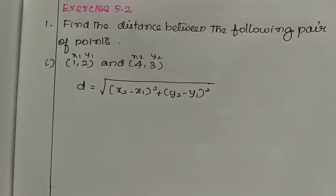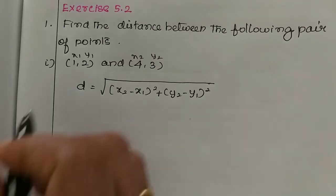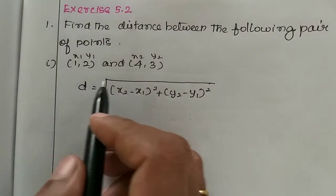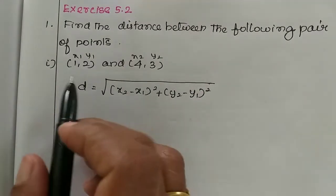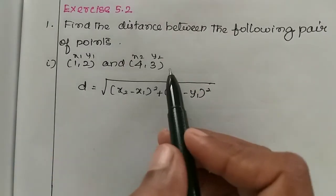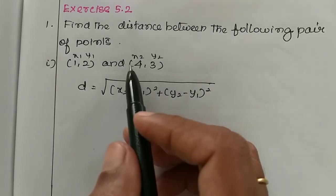Students, in this video, the first sum is to find the distance between the following pair of points. The first sum is (1,2) and (4,3). If you want to note that the number is correct, at the same time, the symbol is correct.